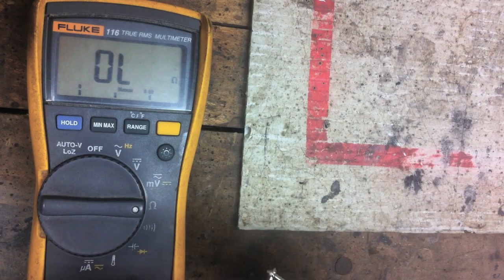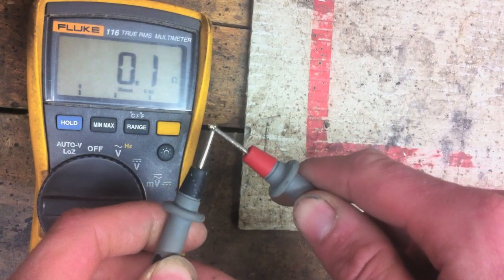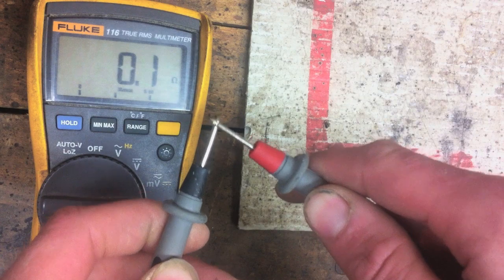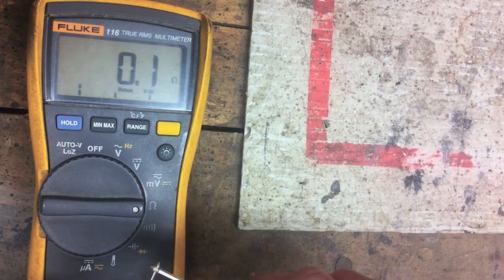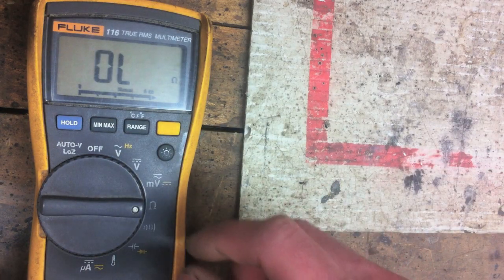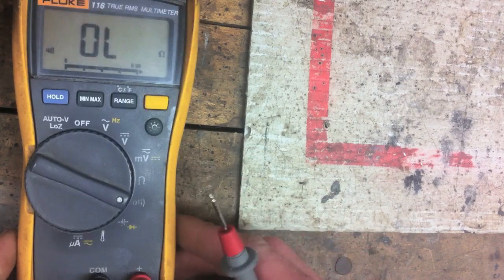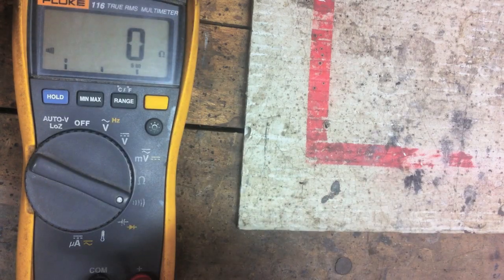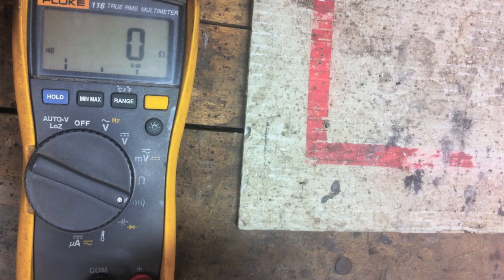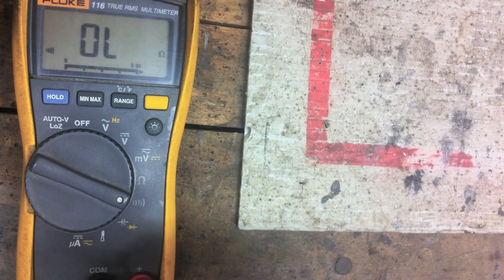Continuity. So right now if I test my leads, short my leads together, it's drawing 0.1 ohms. But you'll notice there's no audible tone. If you want the audible continuity tester you go one notch down. This will test the resistance and it gives you an audible warning.